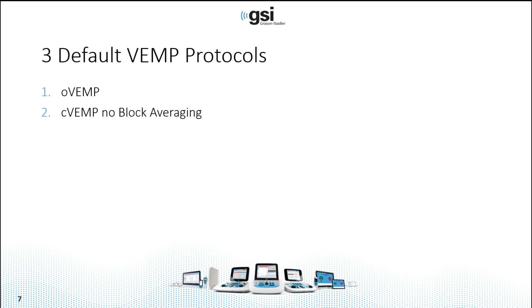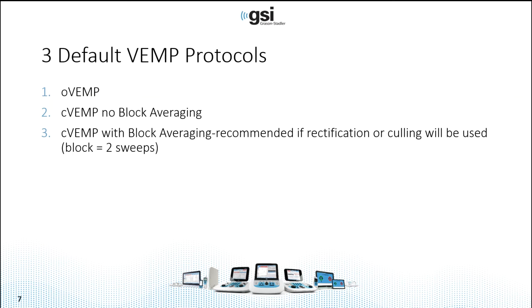There are three VEMP protocols within the EP module: an OVEMP protocol, a C VEMP protocol with no block averaging, and a C VEMP protocol with block averaging. It's recommended that you use the block averaging protocol if you're going to use rectification or if you're interested in culling and viewing each sweep. The reason you don't want to use it routinely is that it takes longer — block averaging lengthens the time because it has to store information for each block. So only use C VEMP with block averaging if you're going to use rectification or culling.